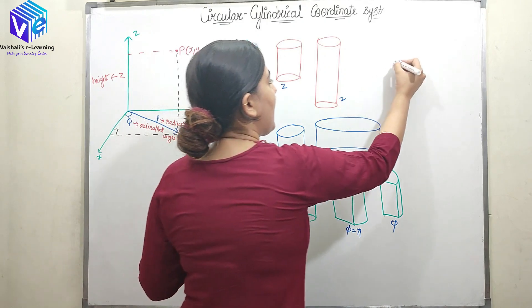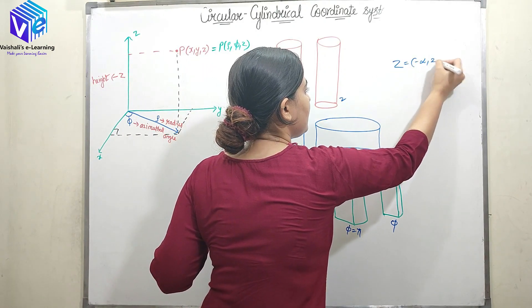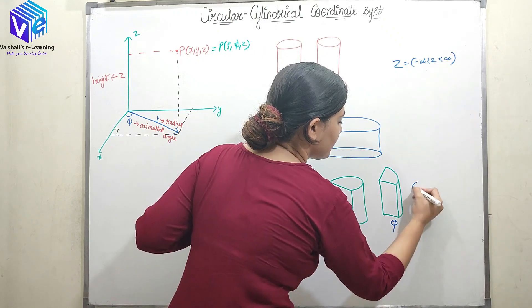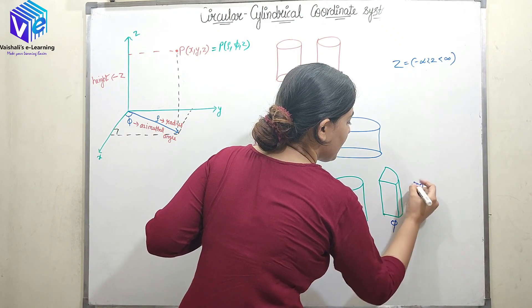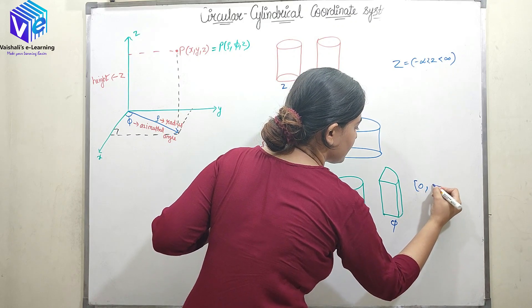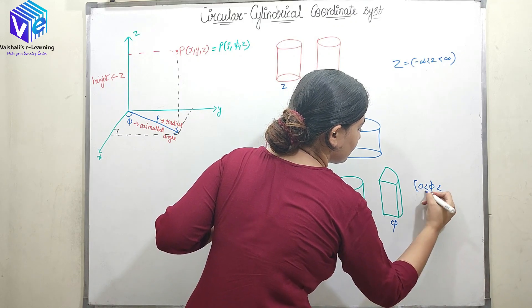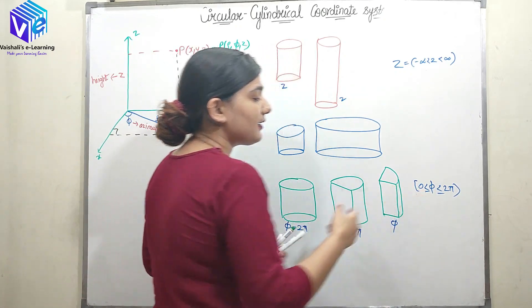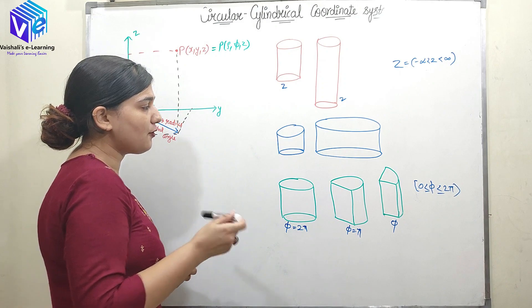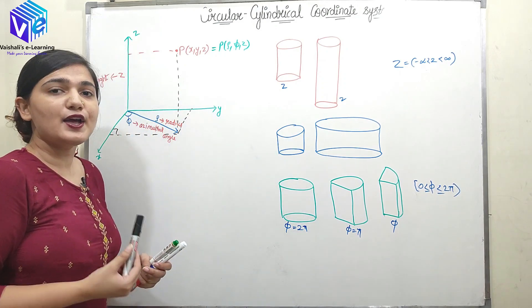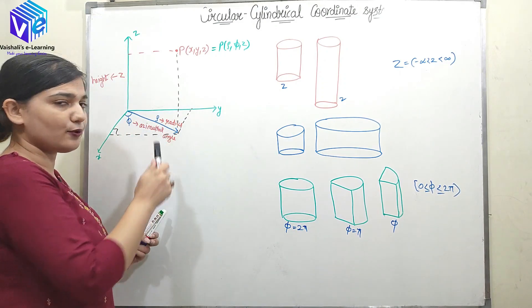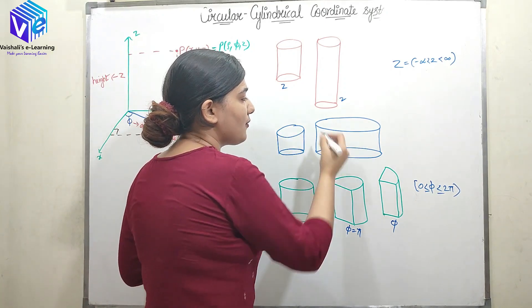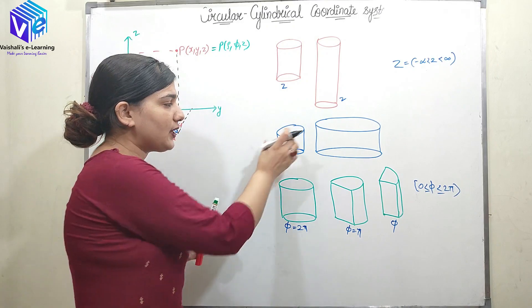The height z ranges from minus infinity to infinity, with closed brackets on both ends — so less than or equal to. Now the third parameter is rho. Rho denotes the radius. If I have two objects that are both circular, both having the same height, and both having 2π phi.